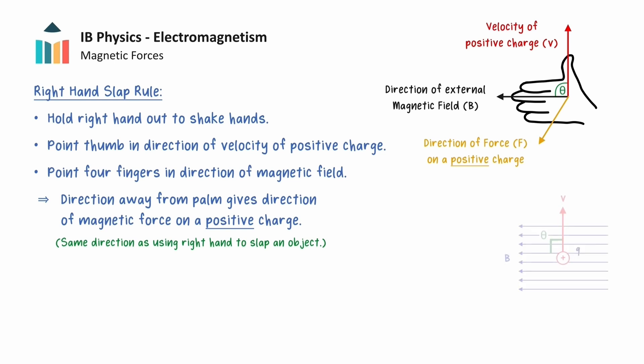In this example, we have a positive charge moving upwards in a magnetic field that points to the left. By aligning our right thumb upwards and the four fingers to the left, we see that the palm points out of the screen, so the magnetic force on this positive charge also points out of the screen.